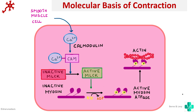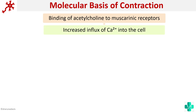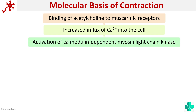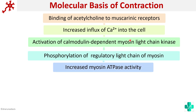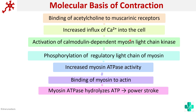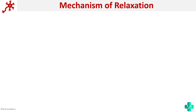So this is how smooth muscle contraction occurs: binding of a neurotransmitter to the receptor causes increased influx of calcium, which activates the calmodulin-dependent myosin light chain kinase. There is phosphorylation of the regulatory chain of myosin, increased myosin ATPase activity, binding of myosin to actin, and the myosin ATPase hydrolyzes ATP causing a power stroke and thereby contraction. An important point to remember here is the name of the enzyme: myosin light chain kinase.